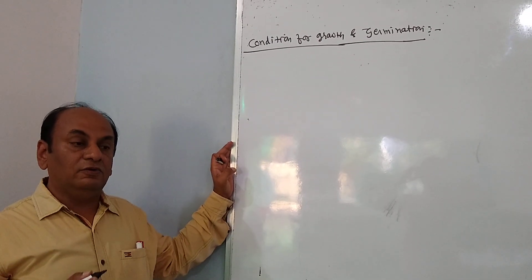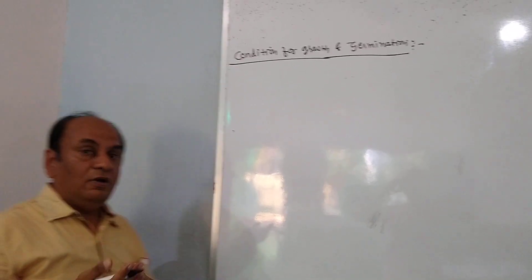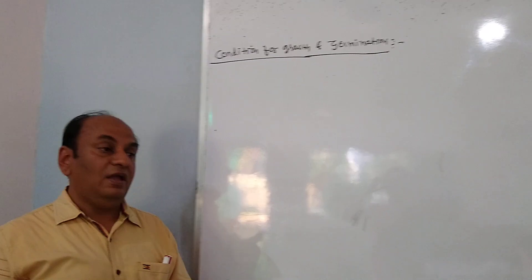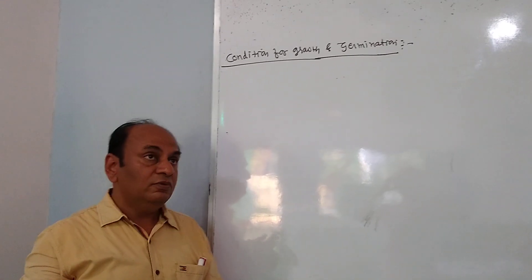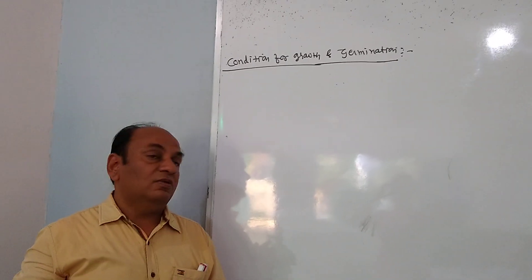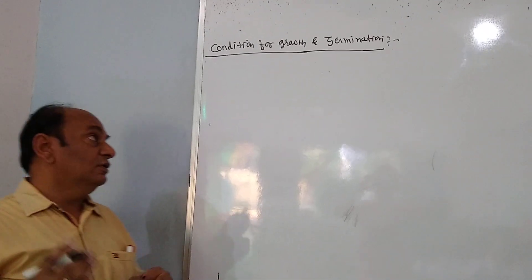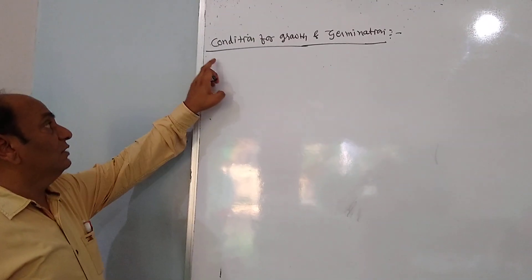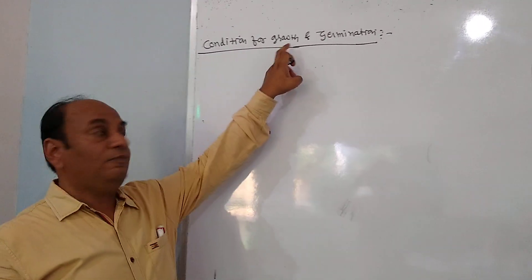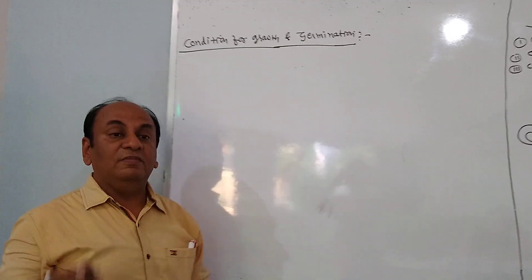We are discussing plant growth and development. We already talked about dormancy and seed germination, and the different types of growth. Today we are discussing the conditions needed for growth and germination.